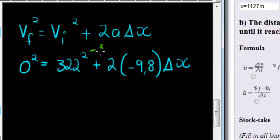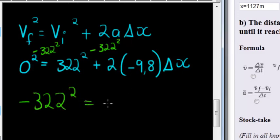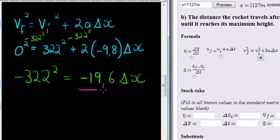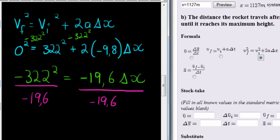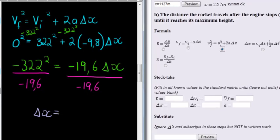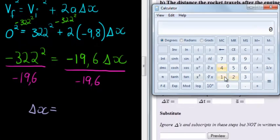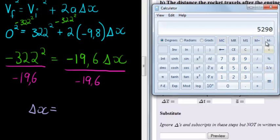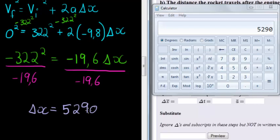To solve this, we subtract 322 squared from both sides, which gives us negative 322 squared equals 2 times negative 9.8, which is negative 19.6, times ΔX. Dividing both sides by negative 19.6 and using the calculator — 322 squared with a negative, divided by negative 19.6 — the negatives cancel, giving a positive answer of five thousand two hundred and ninety meters.